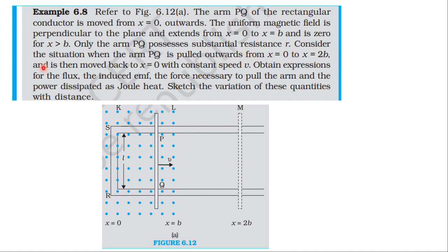Only the arm PQ possesses substantial resistance r. We consider the situation when arm PQ is pulled outward from x equal to 0 to x equal to b, and is then moved back to x equal to 0 with constant speed. We need to obtain expressions for the flux, the induced EMF, the force necessary to pull the arm, and the power dissipated as joule heat, and sketch the variation of these quantities with distance.